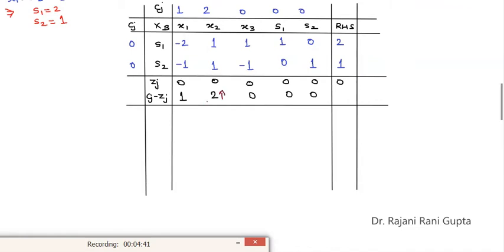Now, as per the rule, we have to select the maximum column. Okay. So it means x2 will be the incoming variable. Now to identify what will be the outgoing variable, we calculate ratio which is 2 and 1. We have to divide this RHS with 1. So this gives you 2, this will give you 1. From here we will be selecting the minimum. So we have S2 is outgoing variable.